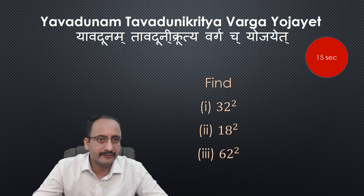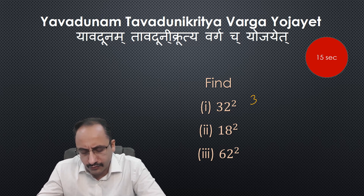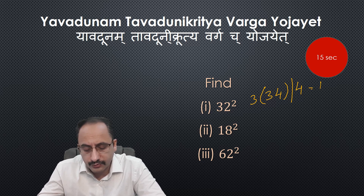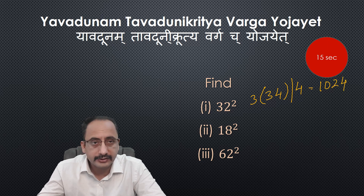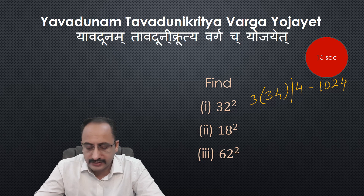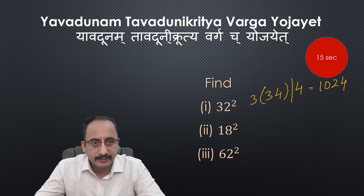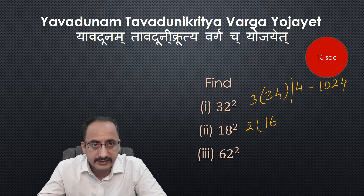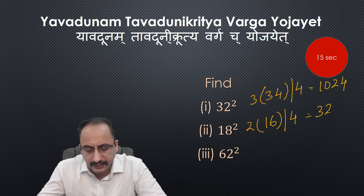Let's verify the answers. First number is 32: sub base is 3, base is 10, deficit is 2. So we write 3 times 34 and then square of 2 which is 4. 34 times 3 is 102, so the solution is 1024 — that is the square of 32. Next: square of 18. If I consider 20 as the reference, base is 10, sub base is 2, and deficit is minus 2.